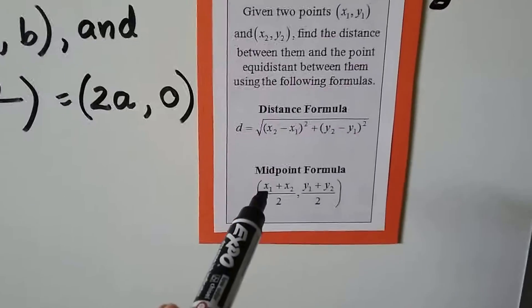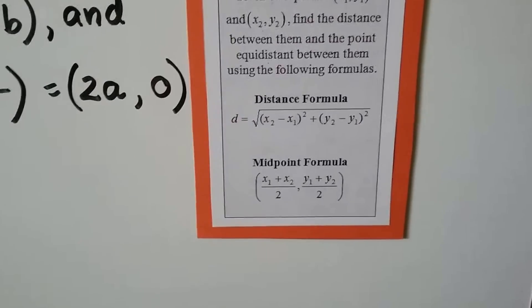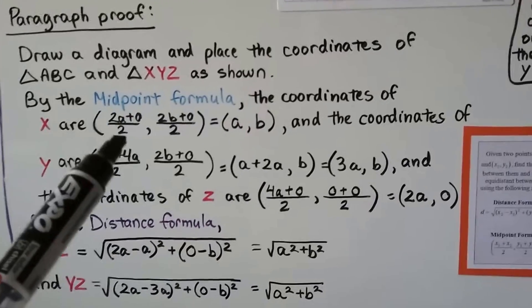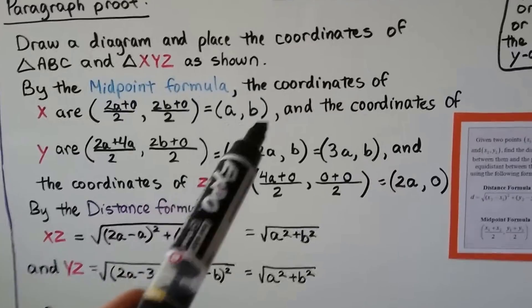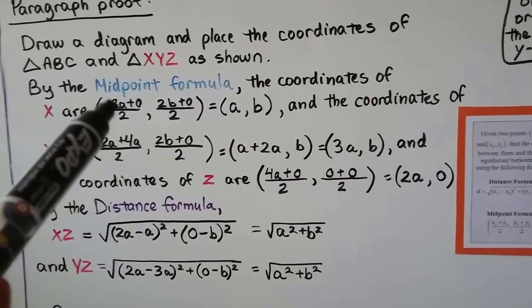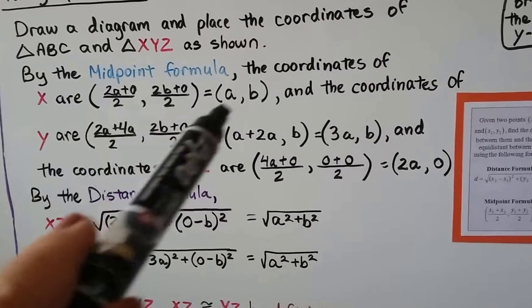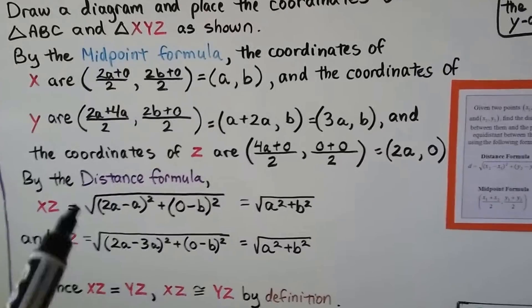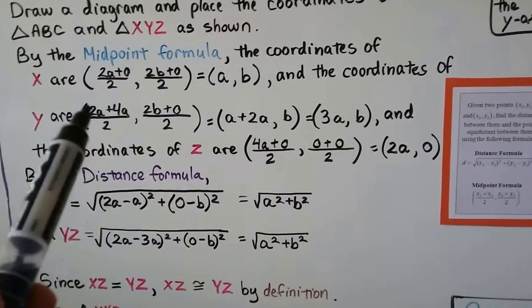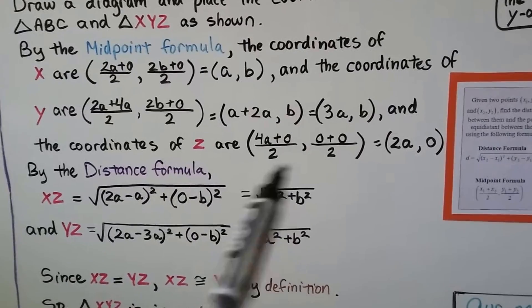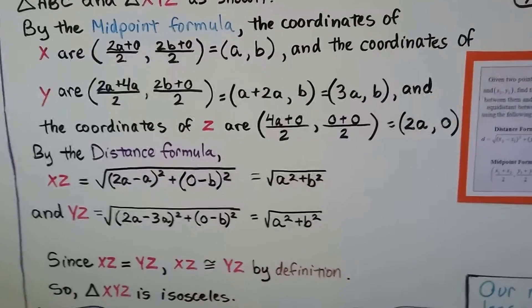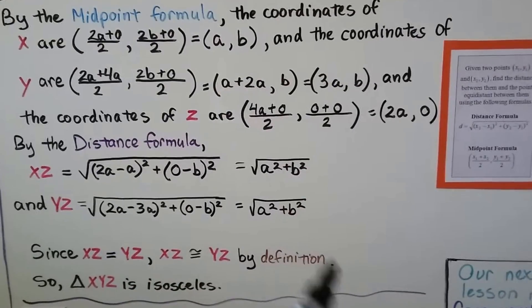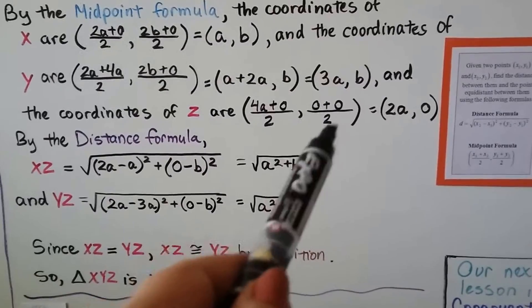So remember we're going to put in the x1, x2 values and the y1, y2 values. They're divided by 2. That's the midpoint formula. We put in our x and y values, and the coordinates of X are the quotient of (2a + 0)/2 and (2b + 0)/2. That's going to give us (a, b). The 2 over 2 becomes a 1, so we have 1a plus 0, so it's an a. And this is 1b plus 0, so it's a b. And the coordinates of Y are (2a + 4a)/2 and (2b + 0)/2. That's going to simplify to a plus 2a. We're going to have 1a plus 2a, which is going to be 3a, and we've got 1b plus 0, which is a b. And the coordinates for Z are the quotient of (4a + 0)/2 and (0 + 0)/2. That's going to give us 2a plus 0, which is just 2a, and this one is going to be 0.